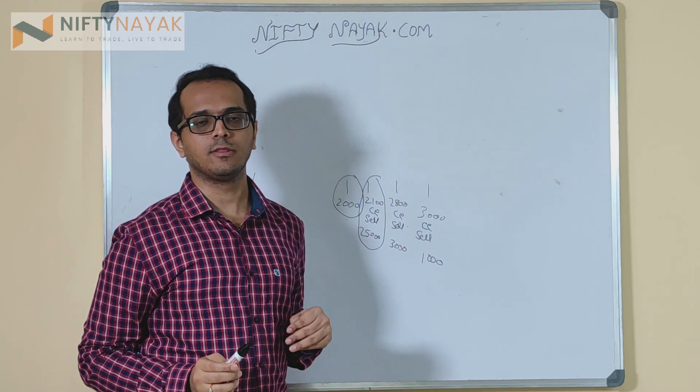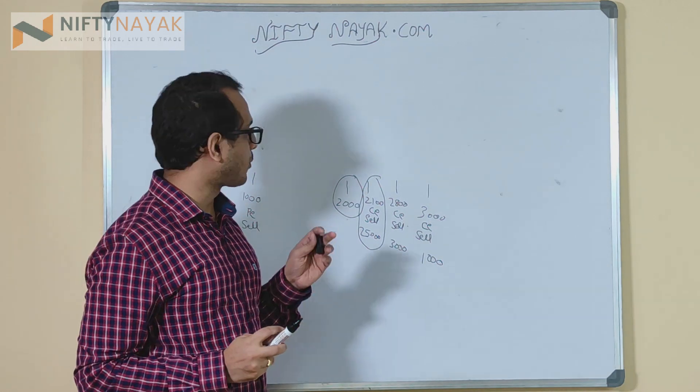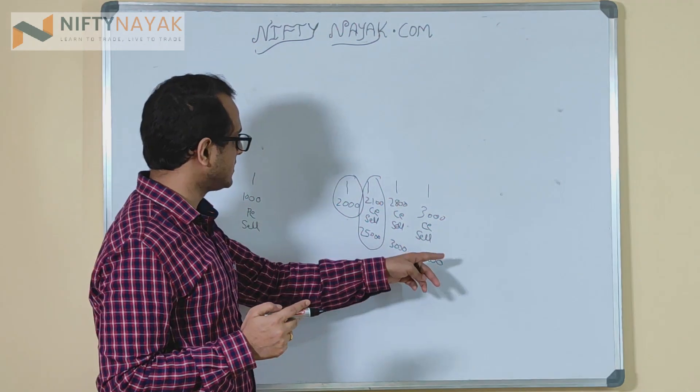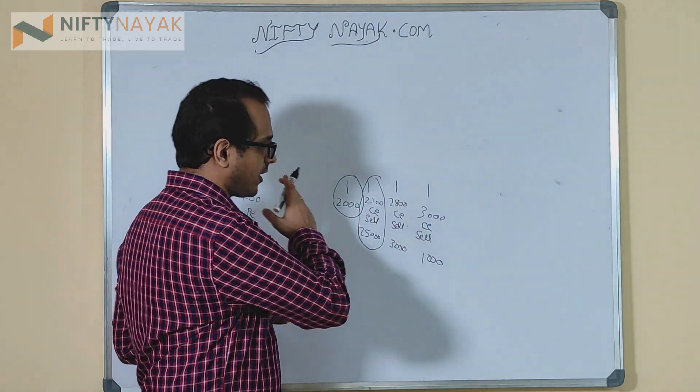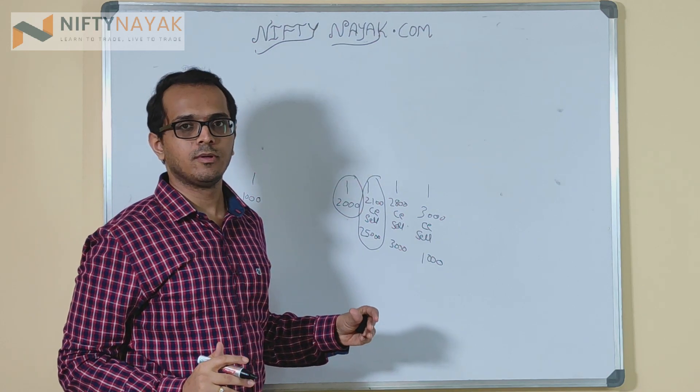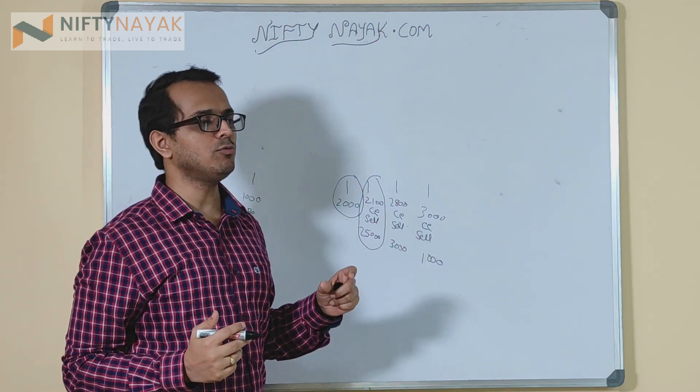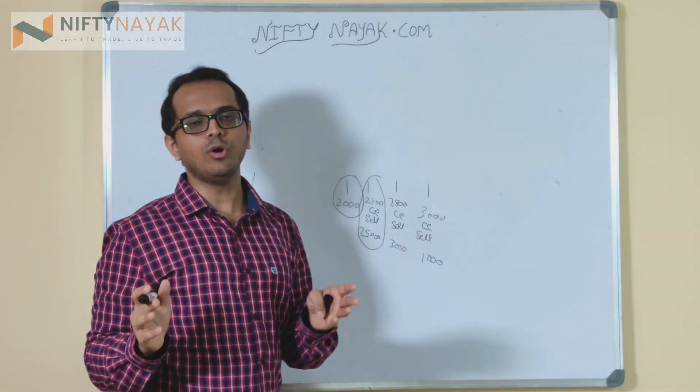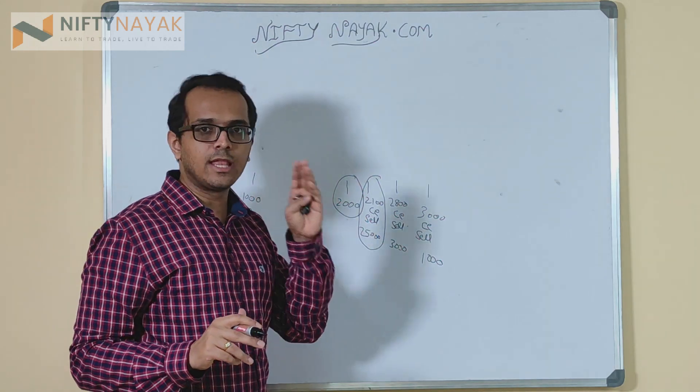As you move closer to the strike, the risk will be very high. Now we have 20 trading days in a month, so in 20 trading days the probability of Reliance going to 2100 is very high. These numbers are just examples. What I was trying to tell you is the further you go from the spot, the less will be your profit. Now you see what are the strikes which is good enough which will give you more returns than fixed deposit.